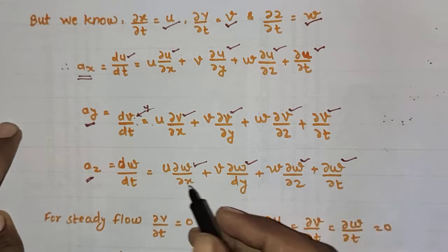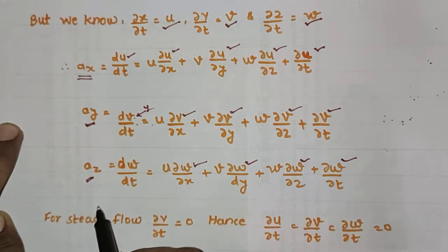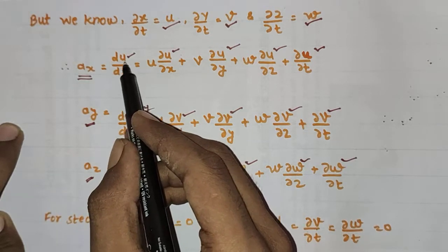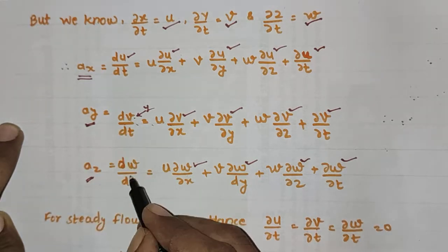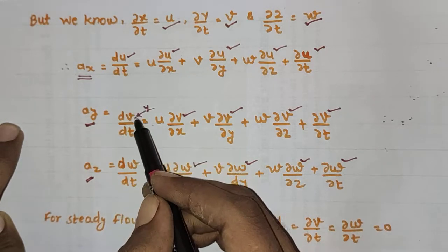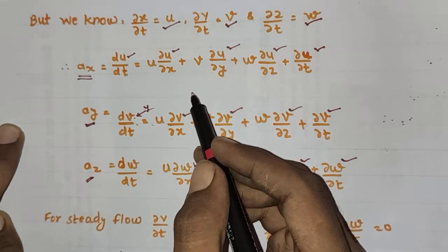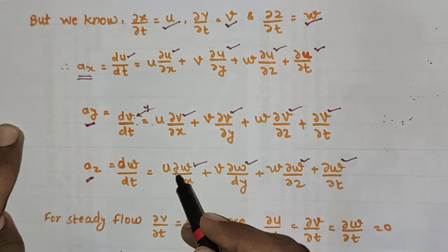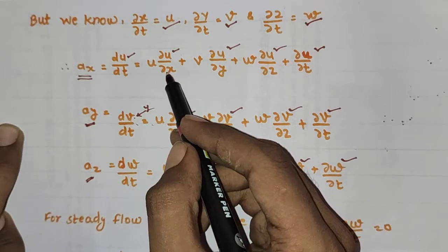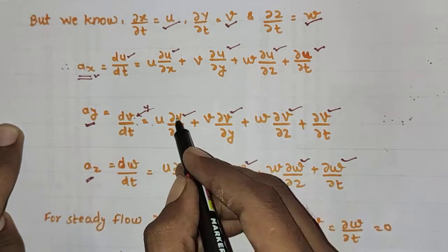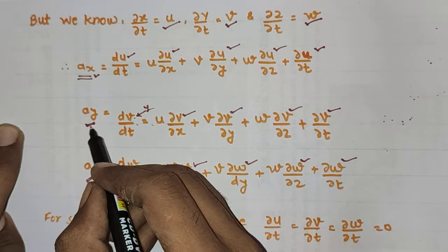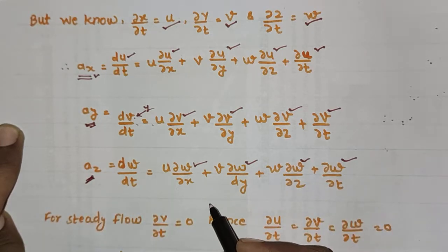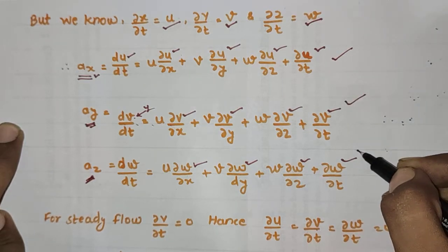To remember these expressions easily: u is the velocity in x, v in y, and w in z. Write du/dt, dv/dt, dw/dt. Then write u, v, w repeated, and pair them with ∂u/∂x if finding the x direction acceleration, ∂v/∂x for y direction, and ∂w/∂x for z direction. This pattern helps you easily recall the expressions for ax, ay, and az.